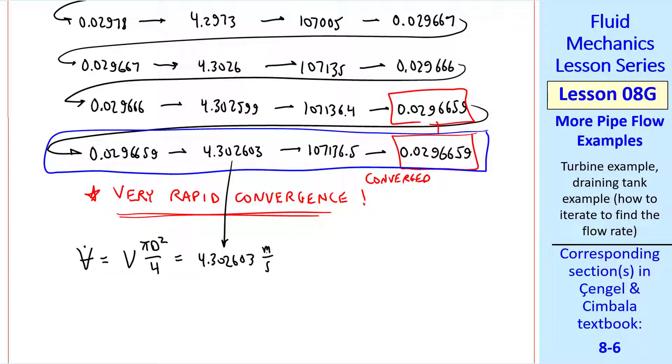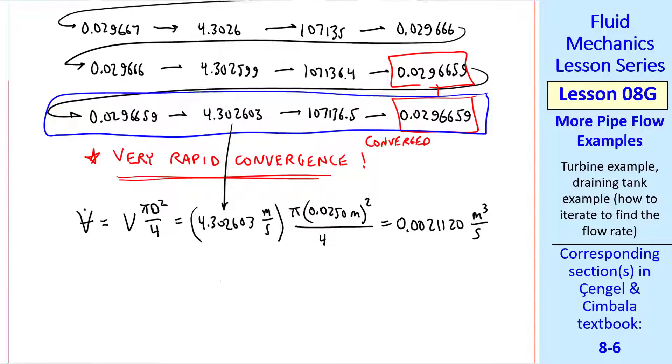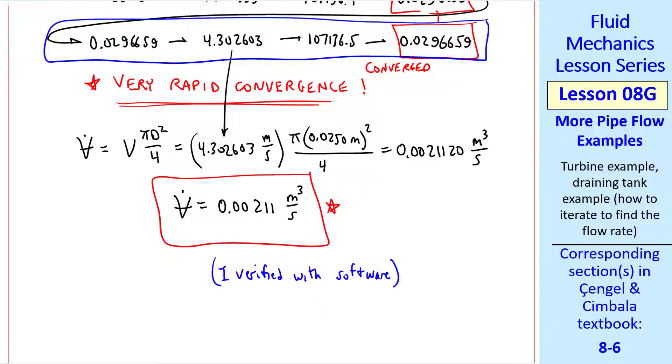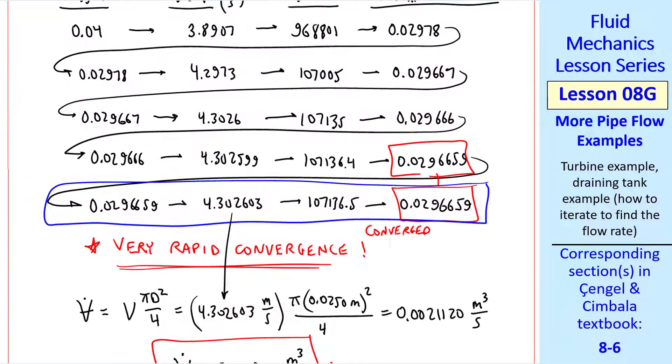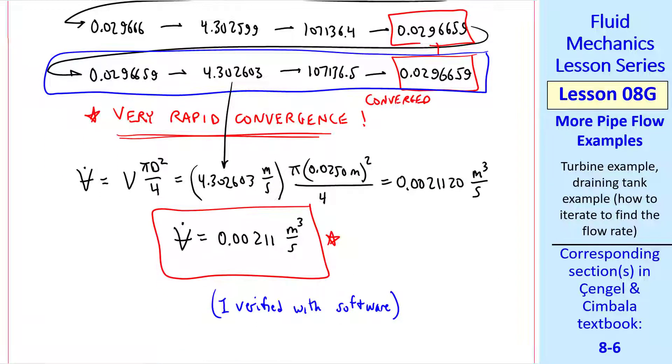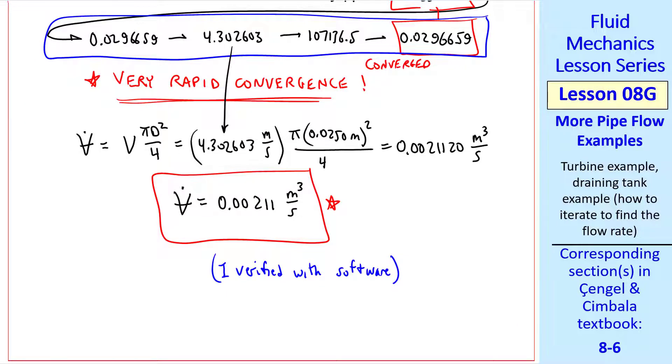So all that's left is to calculate v dot. Using our converged speed, v, and pi d squared over 4, we get our volume flow rate, which I round to three digits as 0.00211 meter cube per second. I verified all these numbers using software. This iteration scheme is quite easy to put into Excel, because once you generate this first row, you can fill down for as many rows as needed. You can also use other software like MATLAB or EASE to solve a set of simultaneous equations. If you do it right, you should get the same answer.